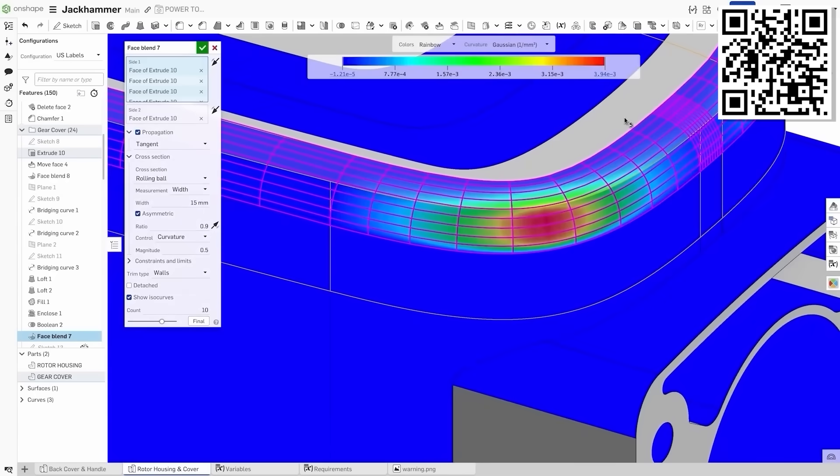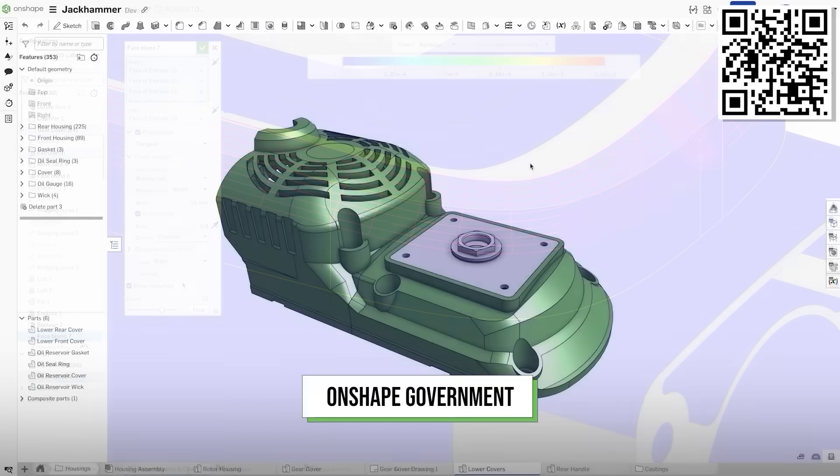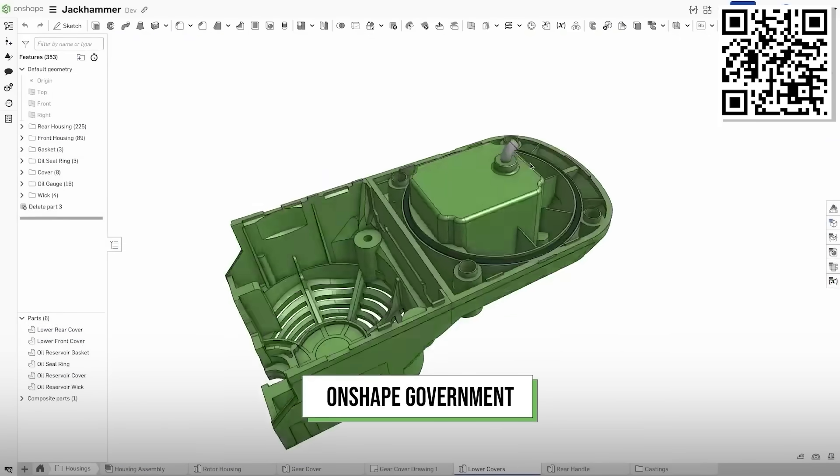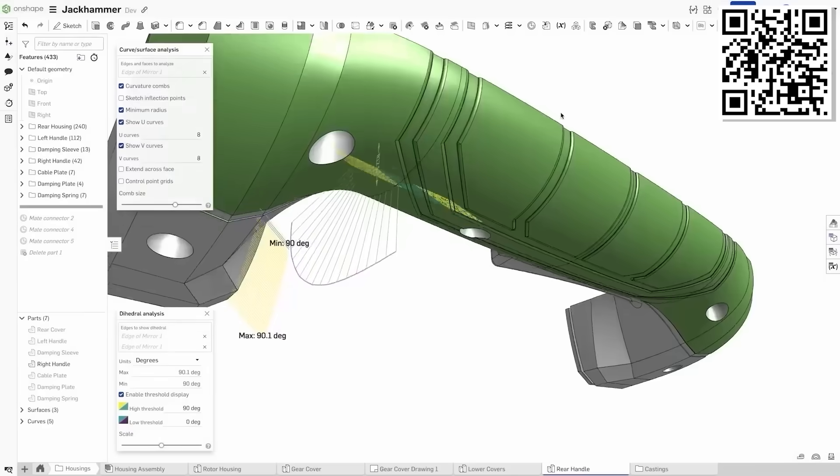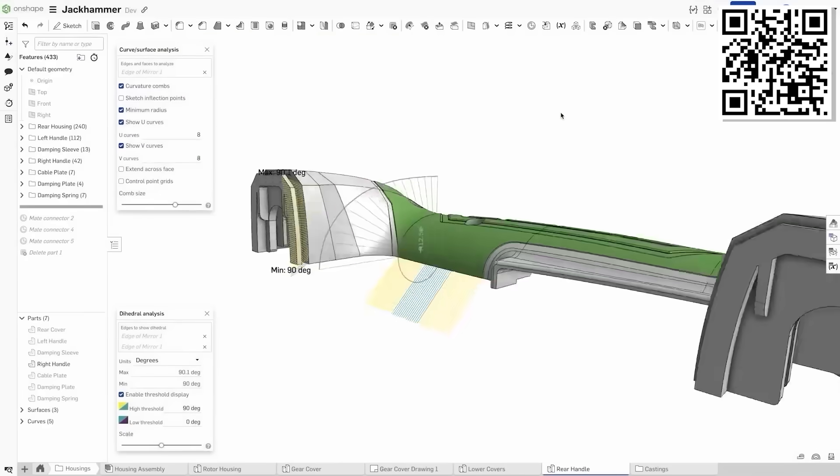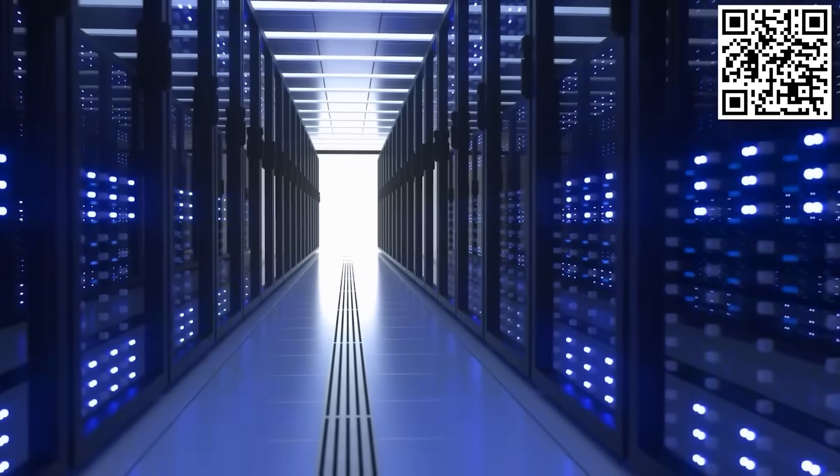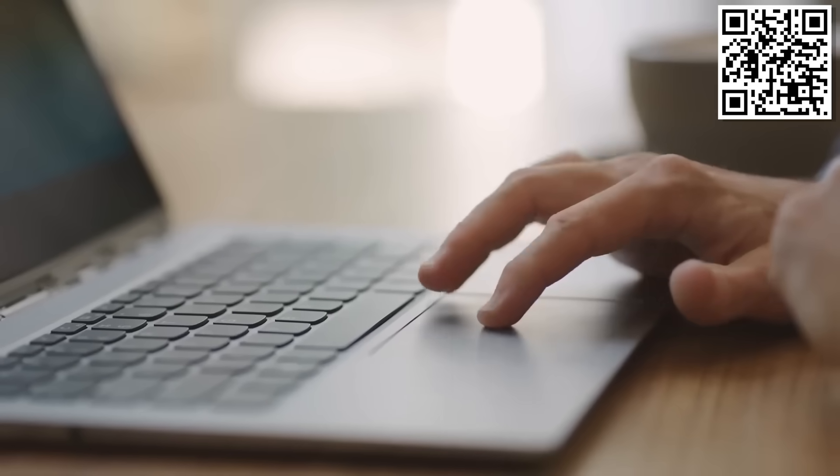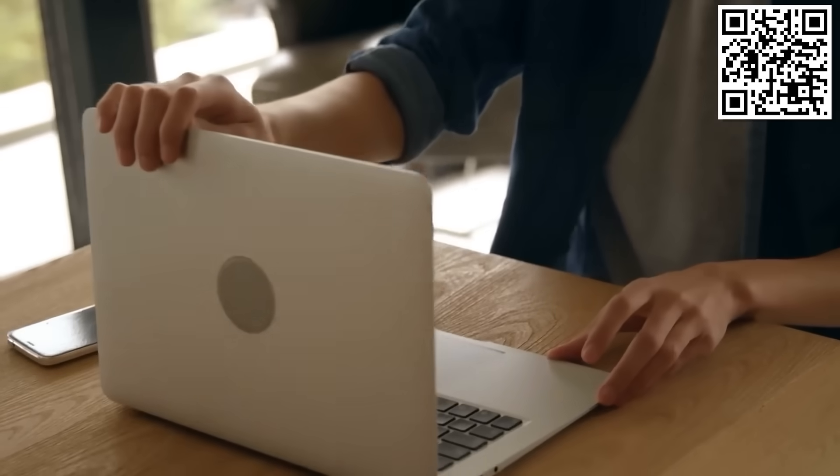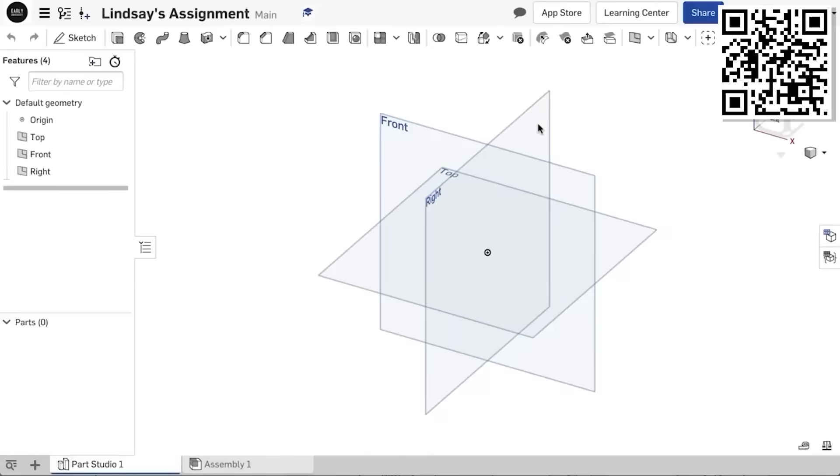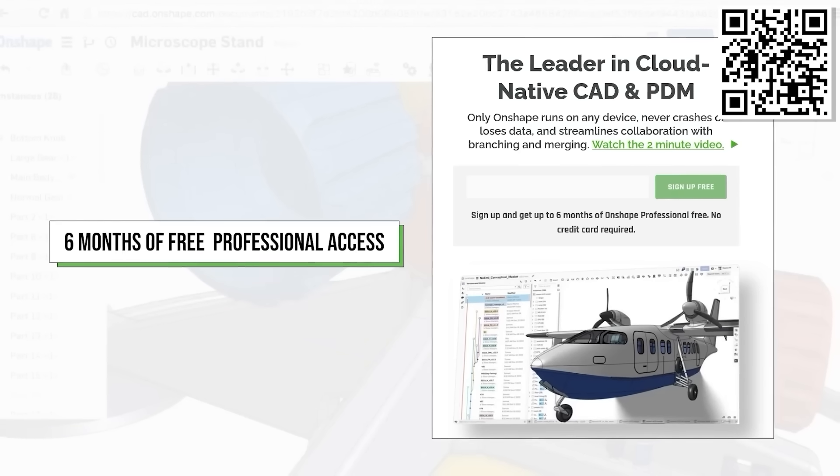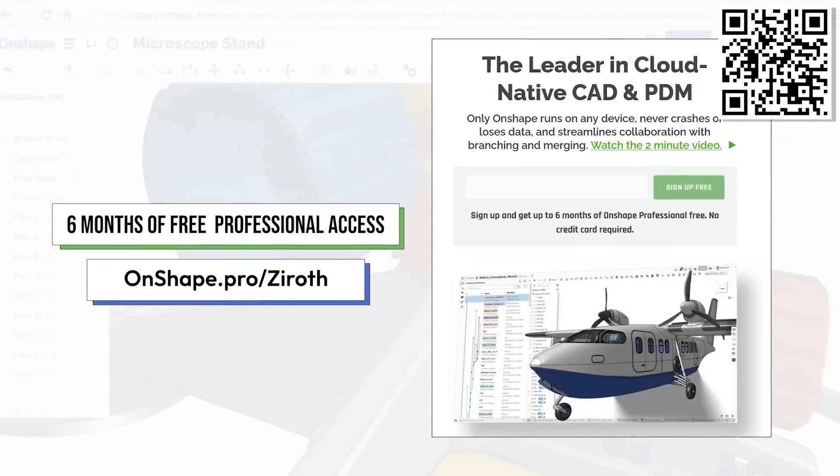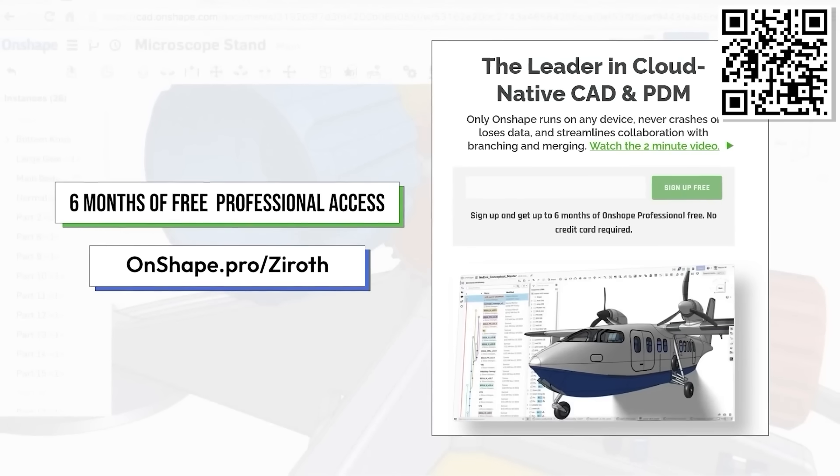For you viewers in the US, Onshape just launched Onshape Government, a version specifically tailored for companies needing regulatory compliance, like ITAR and EAR. And unlike traditional CAD software, Onshape is built entirely in the cloud, accessible directly from your browser, meaning no matter who you are, you can get set up in minutes. Sign up for Onshape today, and get up to 6 months of the professional version for free at onshape.pro.xzeroth.